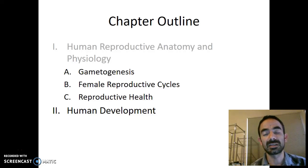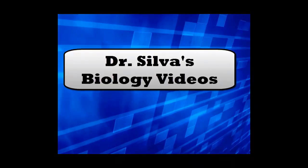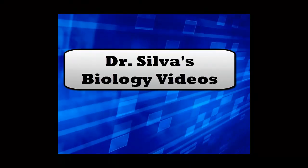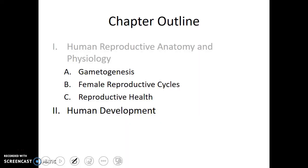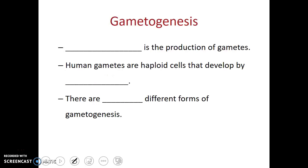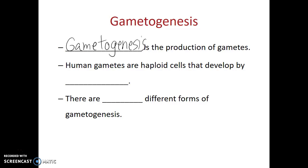In this video, we'll talk about the similarities and differences between gametogenesis in males and females in humans. Gametogenesis is the term used to describe the formation of the gametes — the production of gametes. Human gametes are haploid cells that develop by meiosis.